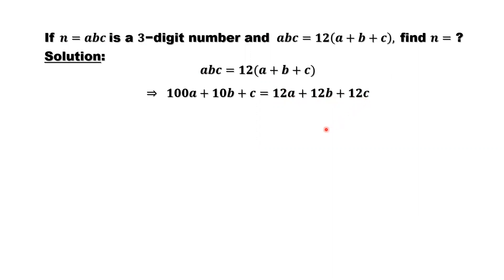We want to rewrite c in terms of others. We move a and b to the left-hand side. That's 100 minus 12a. This is 10 minus 12 times b. This c moved to the right-hand side becomes 12 minus 1 times c. 11c equals 88 times a minus 2 times b.